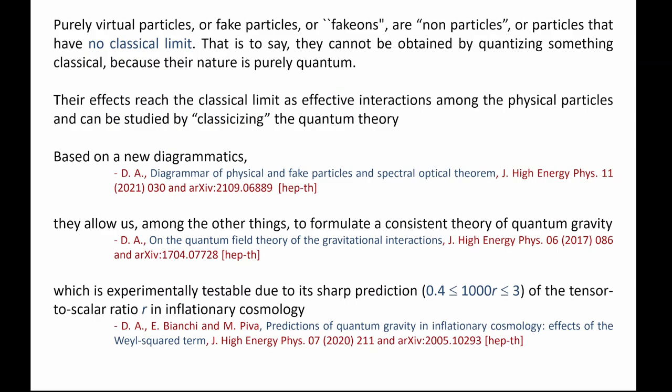How to formulate something like that? You cannot exclude it because it's possible to have something that doesn't reach the classical limit. The best way to formulate it is by means of a new diagrammatics. Among the various applications, maybe the most important one is that you can formulate a consistent theory of quantum gravity — renormalizable and unitary at the same time — and it is unitary thanks to these things.